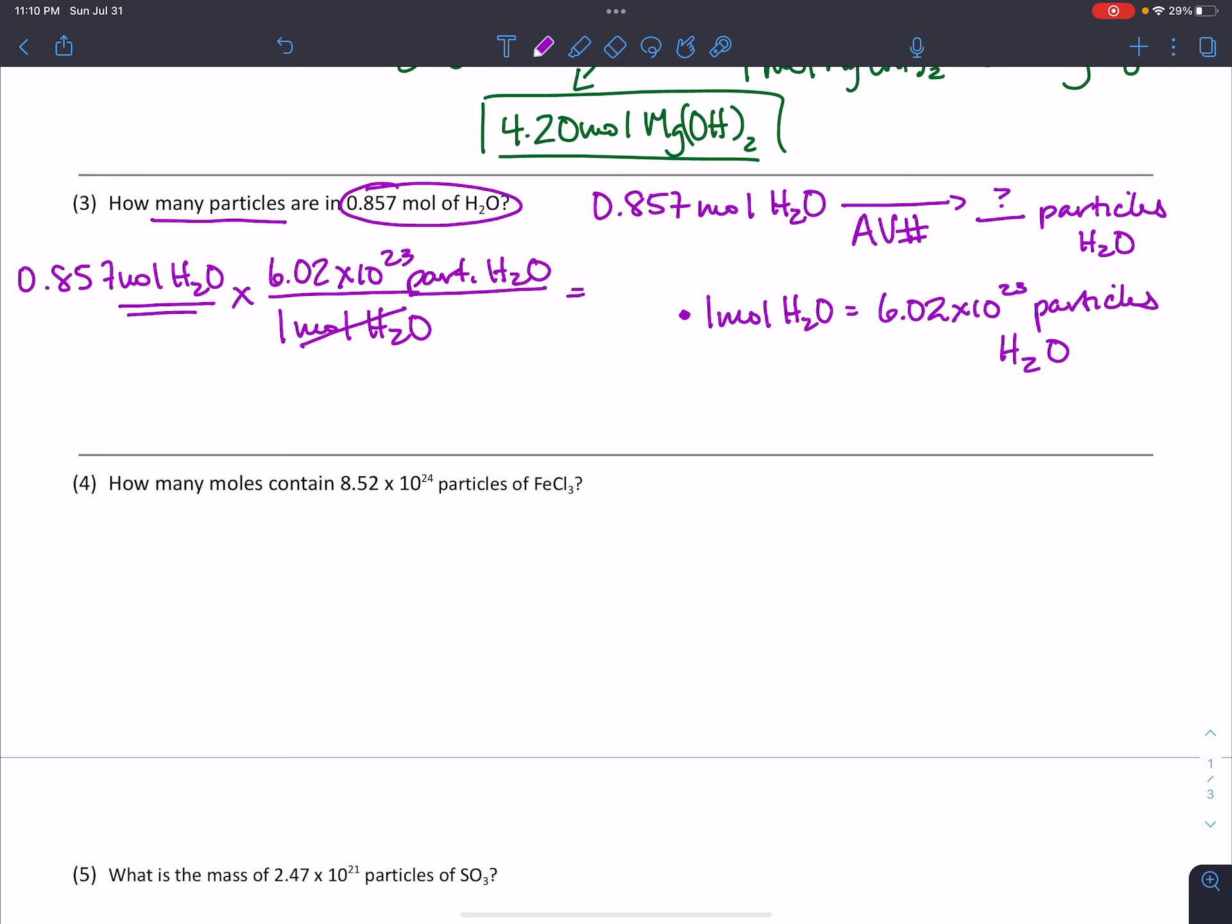We check our units. Moles are going to cancel. We're left with particles, which is what the question was asking. So now it's just a matter of using our calculator. We have 0.857 times 6.02 times 10 to the 23rd. And you should get an answer of 5.16 times 10 to the 23rd particles of H2O.